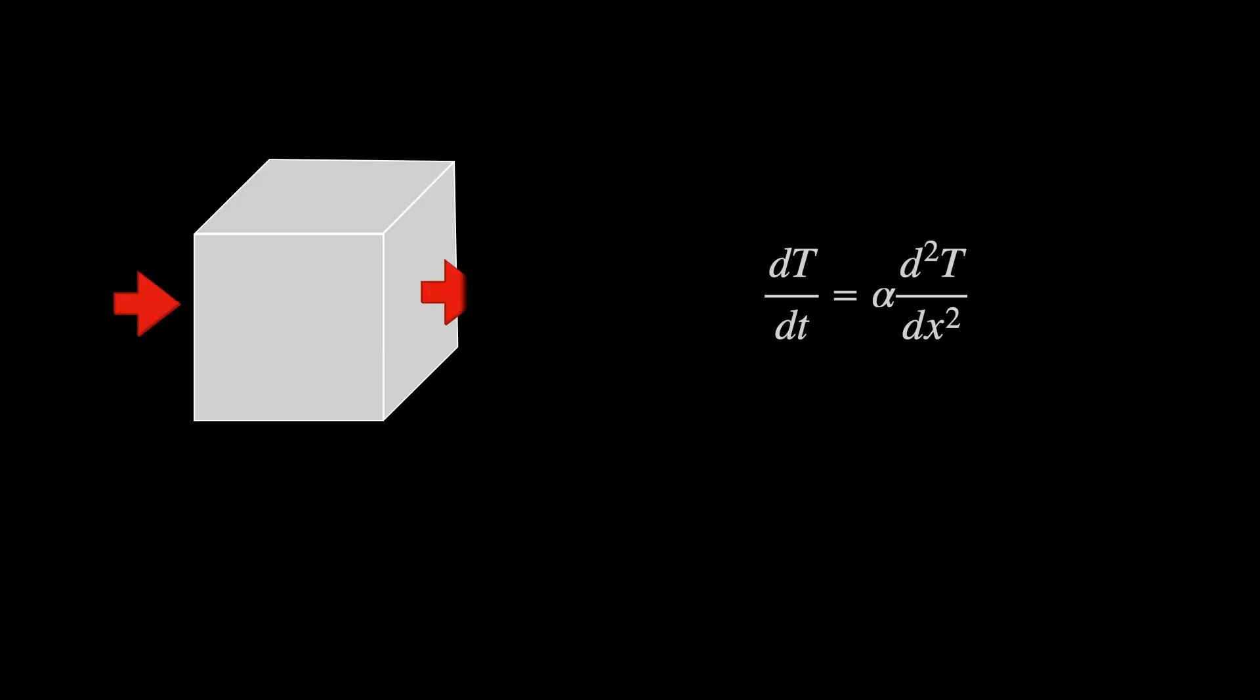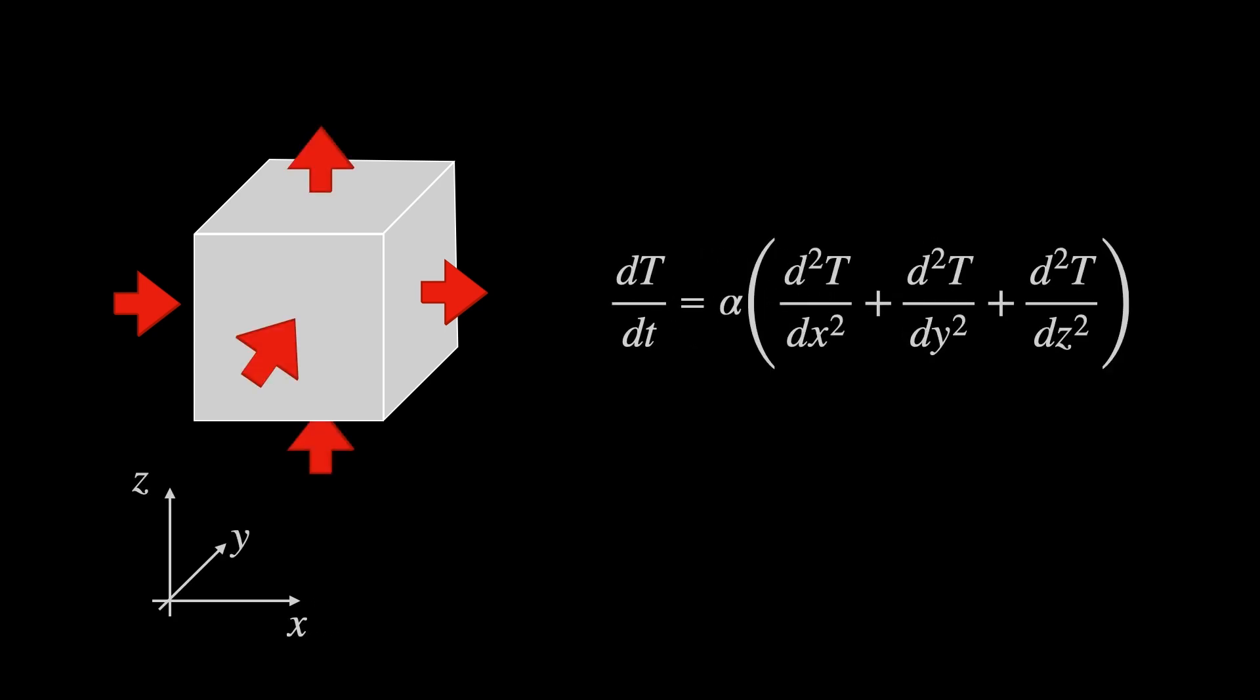Actually, this is the one-dimensional heat equation because we're only considering heat along the x-axis. But if we want to add extra dimensions, all we need to do is add the second derivative terms for each axis because we can think of heat flow happening independently in x, y and z.